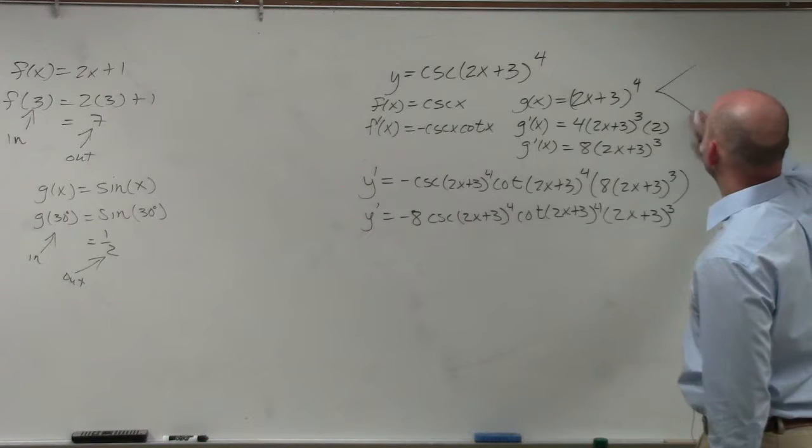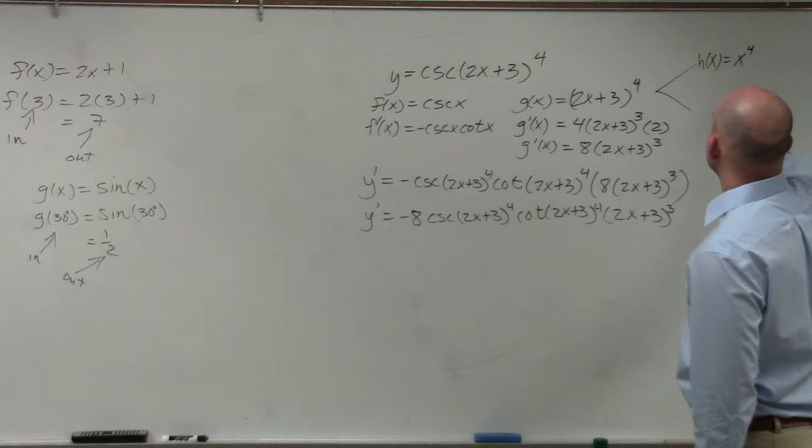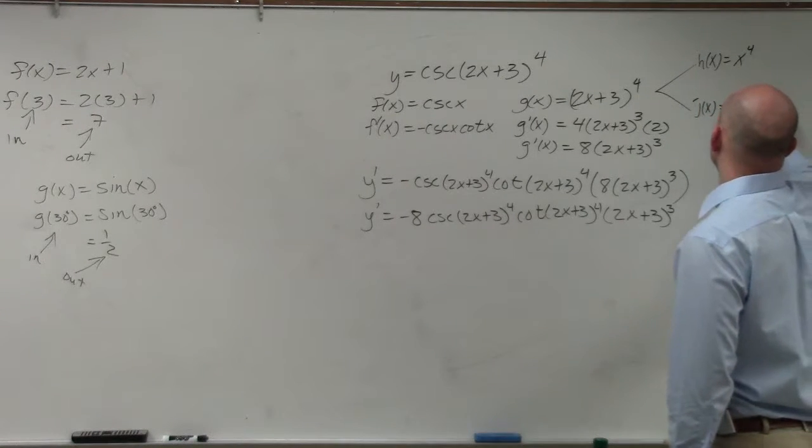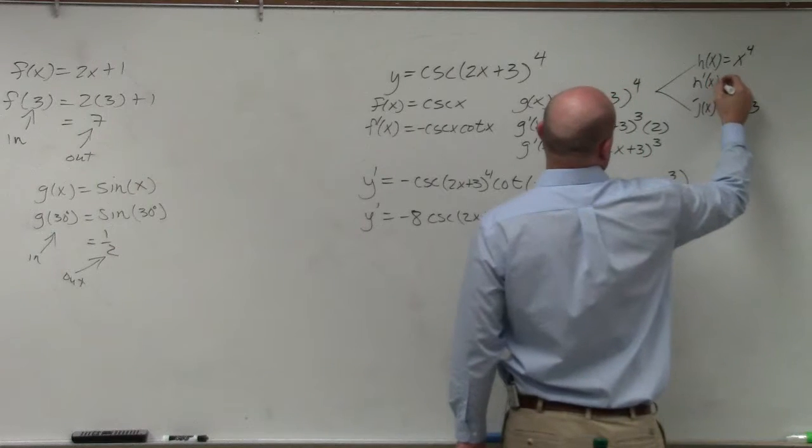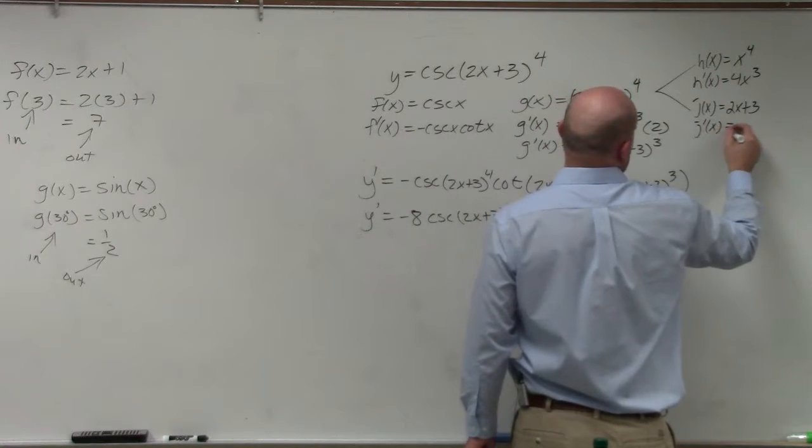h of x equals x to the fourth. j of x equals 2x plus 3. So therefore, h prime of x is 4x cubed. j prime of x is 2.